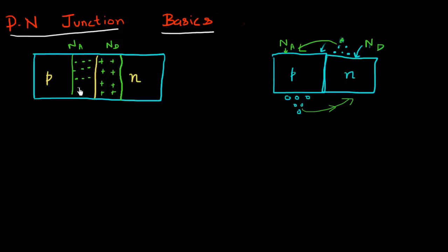This happens in a certain region which is called the depletion width. Let me denote the depletion width on the P type semiconductor with the letter X subscript P, and similarly I can denote the depletion region in the N type semiconductor with X subscript N.